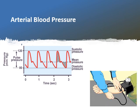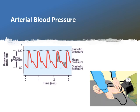Then we have diastolic blood pressure. What is diastolic blood pressure? It is the minimum pressure exerted on the arterial wall during the diastole of the cardiac cycle, caused by the elastic recoil of the aortic blood vessel. In a normal adult, it ranges between 60 to 90 mmHg, with an average of 75 to 80 mmHg.